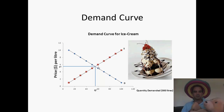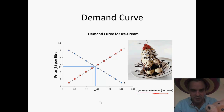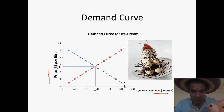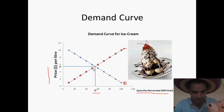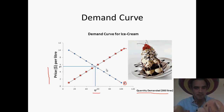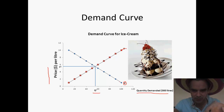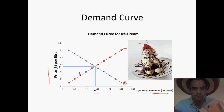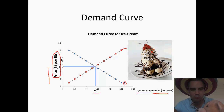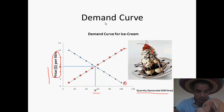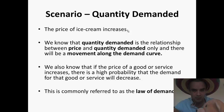Here's our demand curve for ice cream. We've got quantity demanded on the x-axis and price per litre on the y-axis. Make sure you label your curves — easy marks for NCEA. D for demand, S for supply. When the two curves intersect, that is called the equilibrium. Label it Q1 and P1. Make sure you label your axes — it's all worth marks. Also make sure your demand curve has a title. Easy marks, guys and girls.